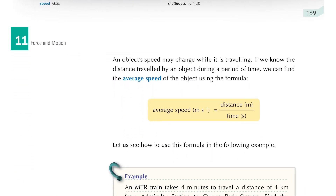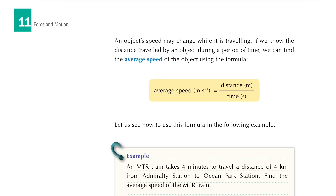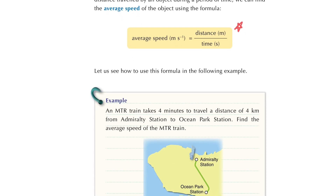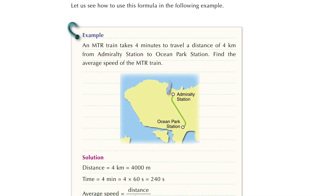Now let's look at the definition of speed. Here is the formula we should remember for correct calculations: average speed is equal to distance over time. So if we know the distance and time, we can calculate the speed.